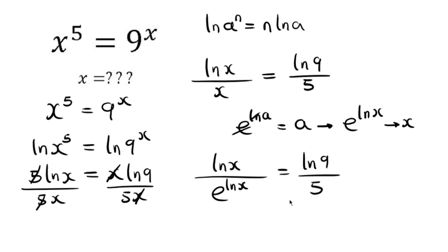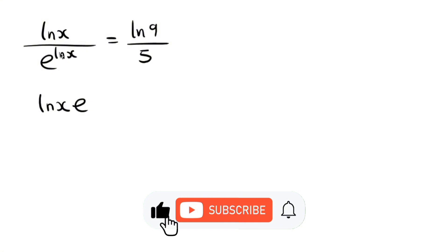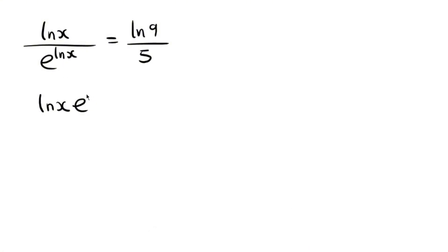Now I want to move ln(x) from the denominator to the top. As I move it to the top, it affects the sign in the power — the sign changes from positive to negative. So we get e^(−ln(x)), and the equation becomes e^(−ln(x)) equals ln(9)/5.